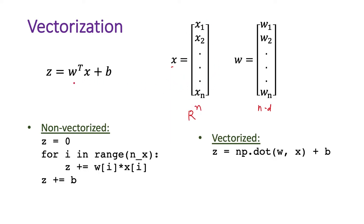To calculate this, we perform element-wise multiplication: w1x1 plus w2x2 all the way up to wnxn. This gives us the first quantity, then we add b to it.